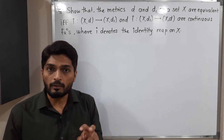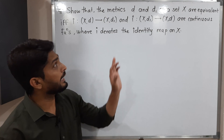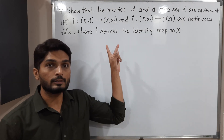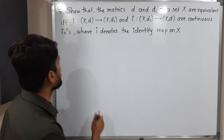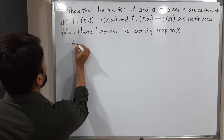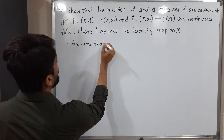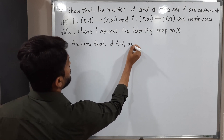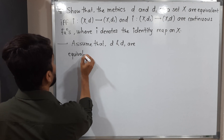Since we have an if and only if statement, we will first assume that d and d1 are equivalent metrics and prove that the two identity functions are continuous. So let us start — assume that d and d1 are equivalent metrics on X.